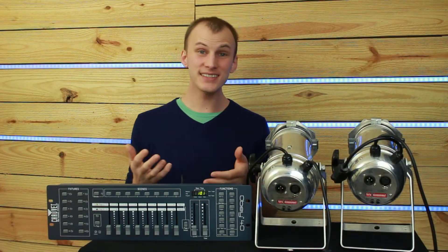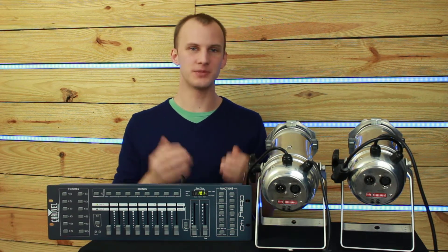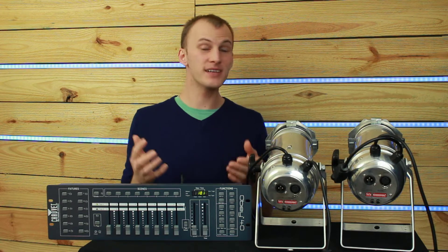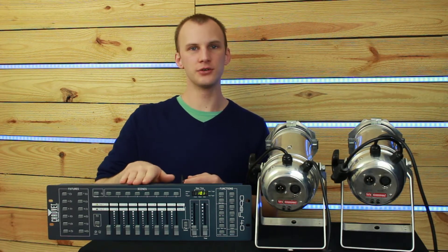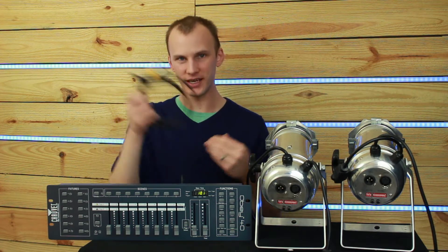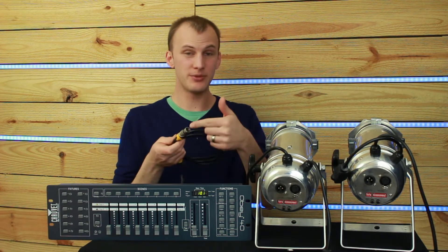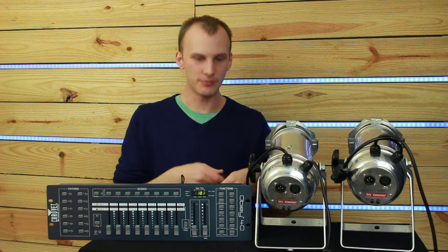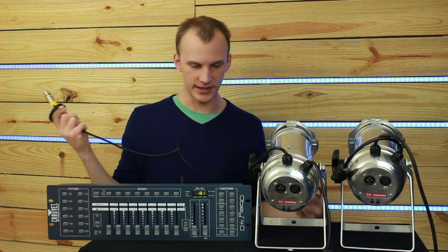Now the next thing to do once we've got power hooked up is we need to hook up DMX signal. Now, DMX is the signal that lighting controllers use to communicate with lights. So, I'm just going to go ahead and I've got a couple cables here. These are a 3-pin DMX cable. There's also 5-pin. That's the other type you'll see out there.